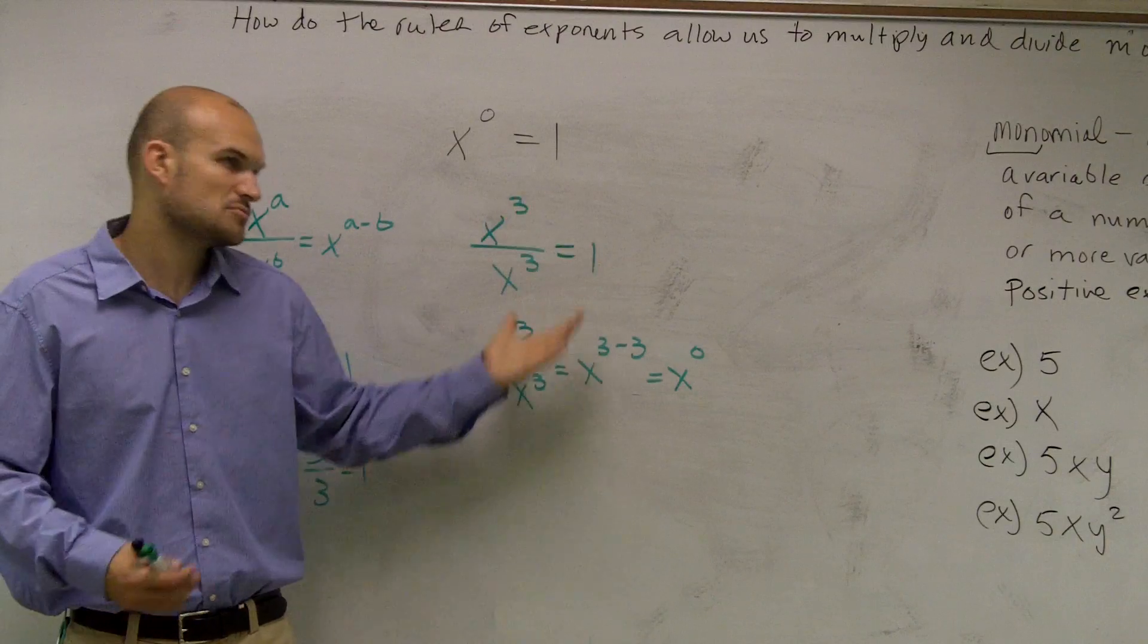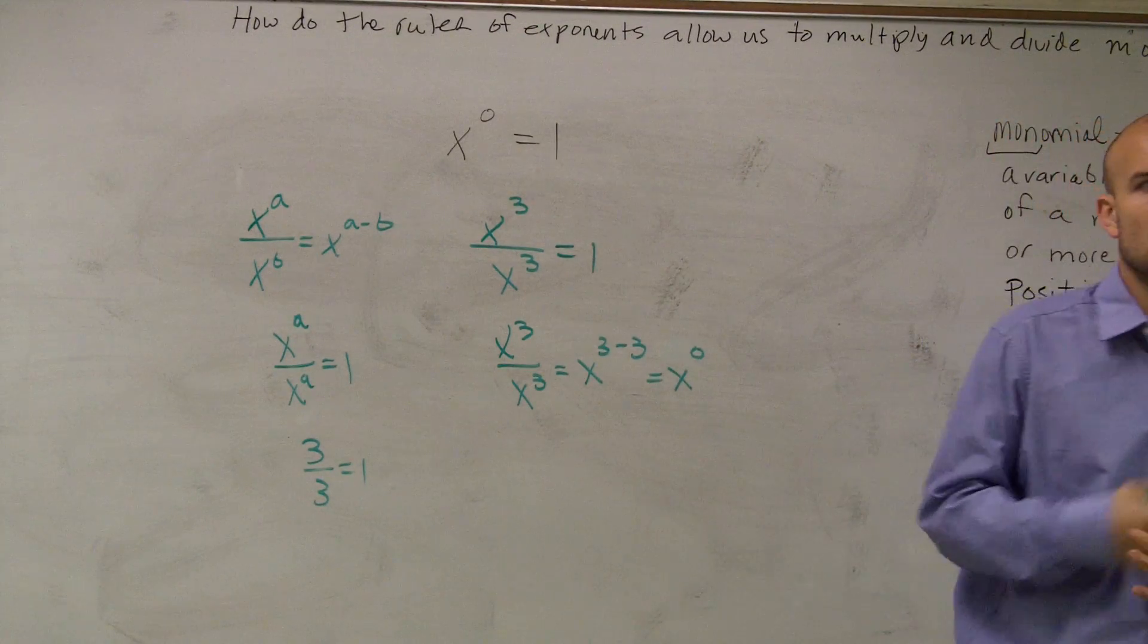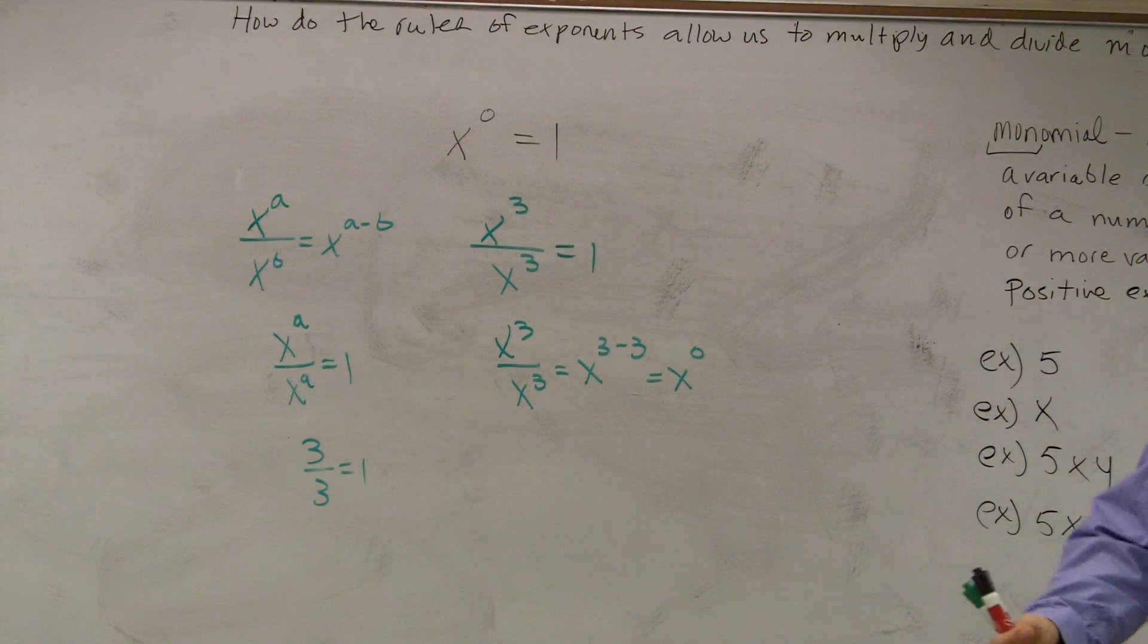OK? So I mean, all I'm saying is, by using our rule of exponents, we can understand that. That's why x to the 0 equals 1. This is like this, guys.